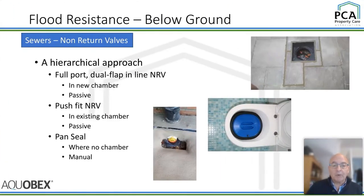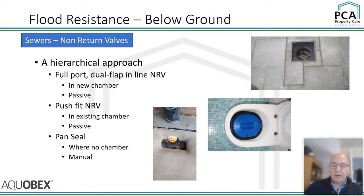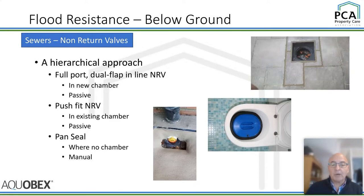Below ground, we have a number of options and we like to take a hierarchical approach. The preference is to put in a full-port inline dual flap valve. There are lots of issues with non-return valves — ragging being the biggest one, where anything other than the three P's put down drains can get caught in the flat valves. Having two gives a safety factor. Where there's no space for a chamber, a push-fit valve can be used. And where there are no chambers at all — particularly in older houses — there's a manual device called a pan seal, which you inflate with a bicycle pump and place into the toilet rim.